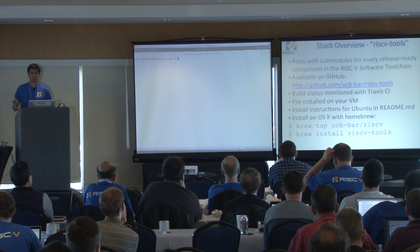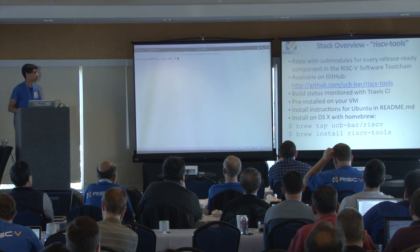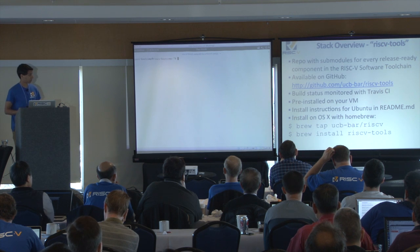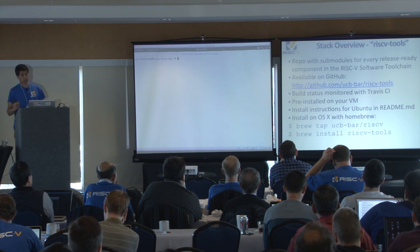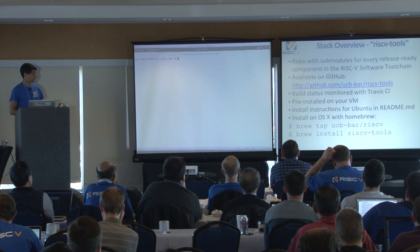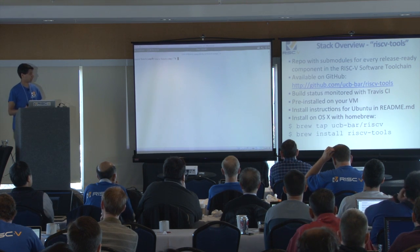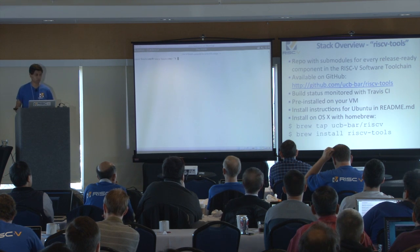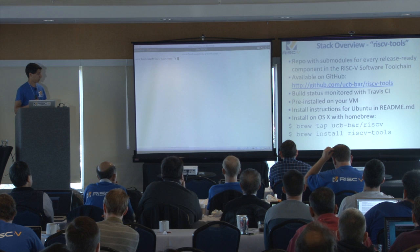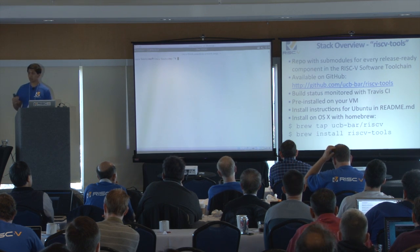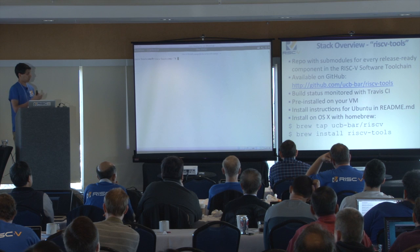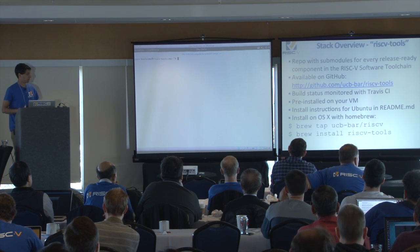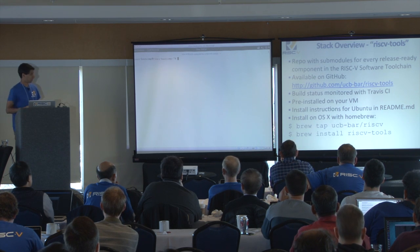RISC-V tools is our big repo that contains all of our production-ready tools. It's available on GitHub under the UCB-bar organization. Build status is monitored with Travis CI, so you can always check that the tools are passing. It's pre-installed on your virtual machine since compiling and installing takes quite a bit of time. Installation instructions are available in the same repo, and you can easily install it on OSX using Homebrew. We'd be happy to help you install it on your own system during lab time.